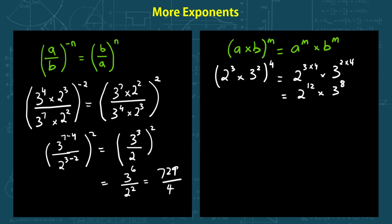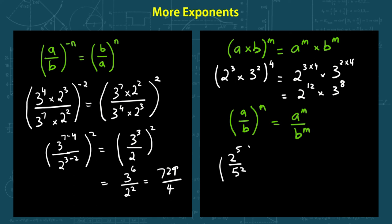One more rule: division, which is very similar. If we have a over b, to the power of m, this equals a to the power of m over b to the power of m. For example, 2 to the power of 5 over 5 to the power of 2, all to the power of 3: we get 2 to the power of 5 times 3, over 5 to the power of 2 times 3, which is 2 to the power of 15 over 5 to the power of 6.